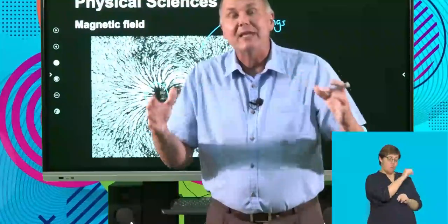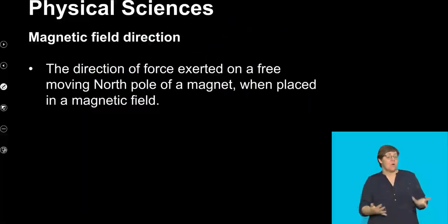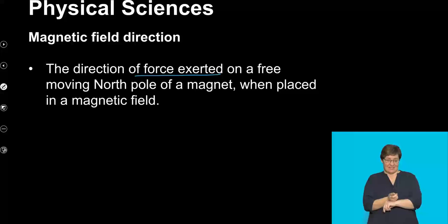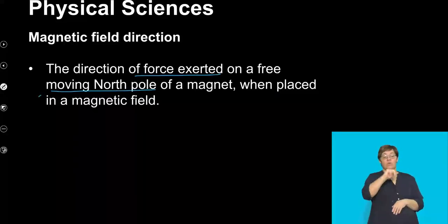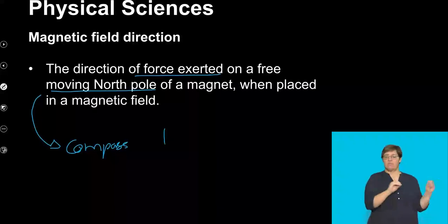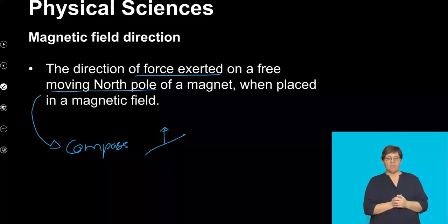This brings us to the idea of the direction of a magnetic field. We can test it using a compass — the direction of force exerted on a free-moving north pole. A free-moving north pole is a fancy name for a compass.